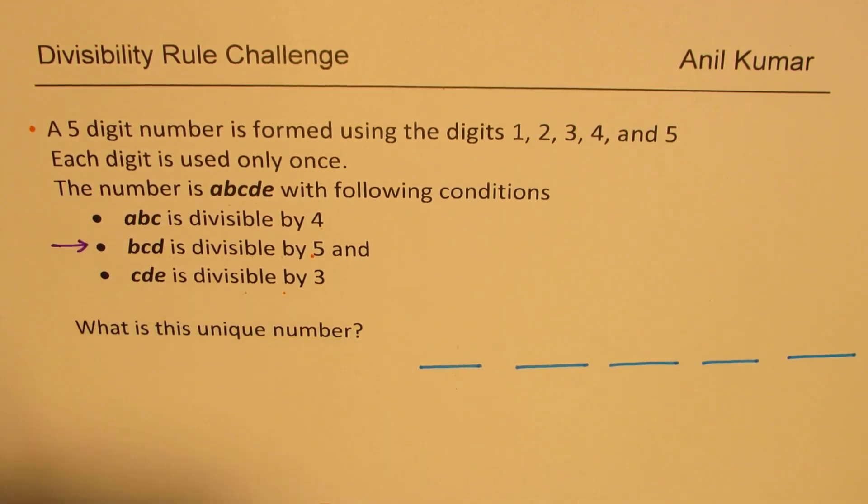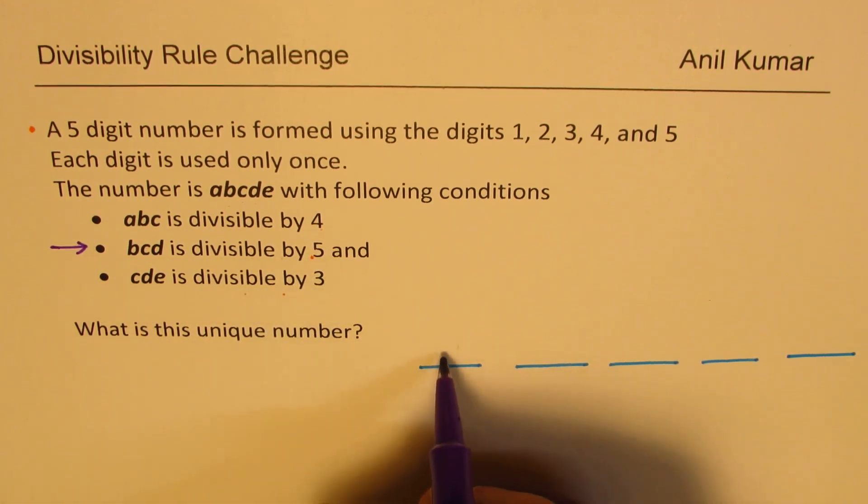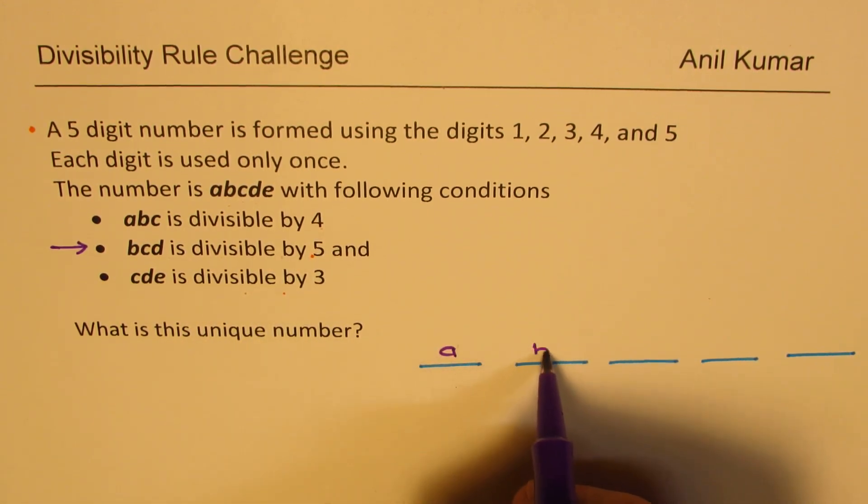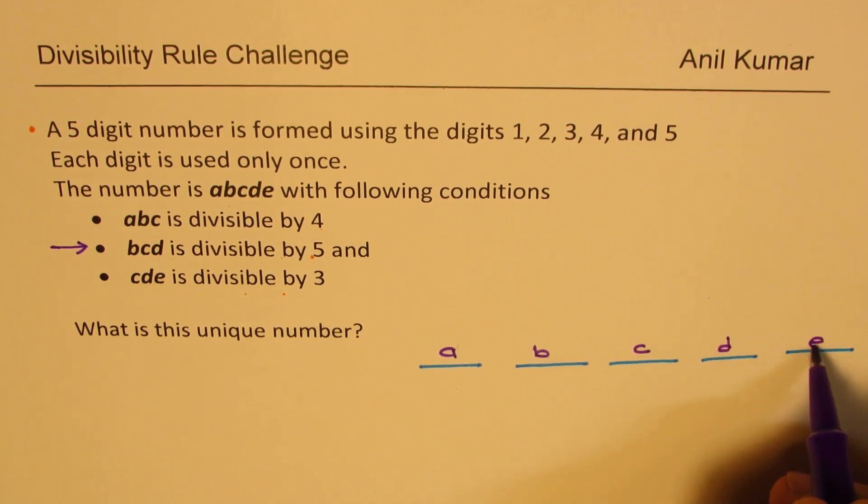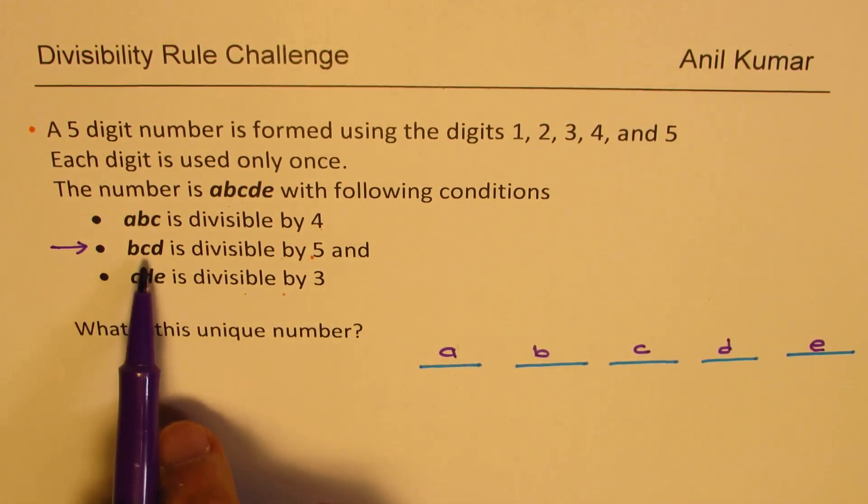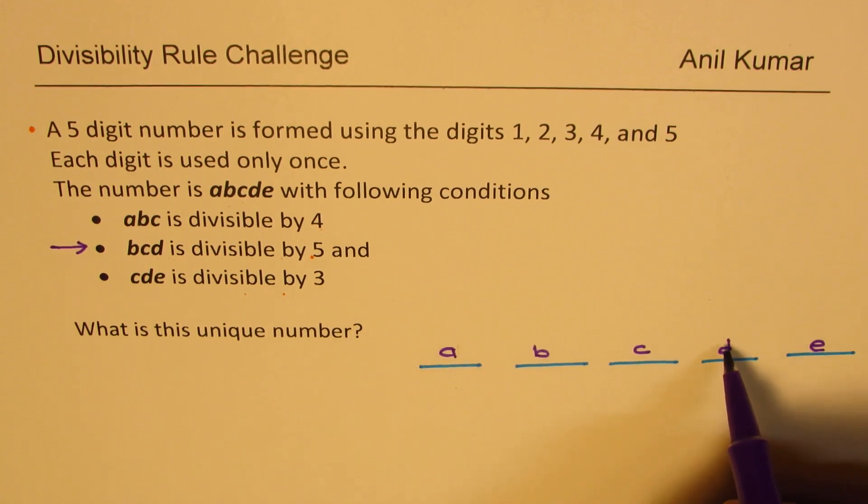Let's try to understand divisibility rules as we fill in our numbers. Simplest is this: BCD is divisible by 5. So what can D be? Well, D could be just 5.